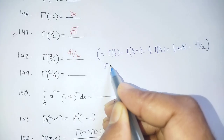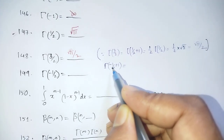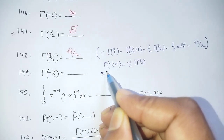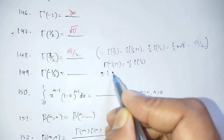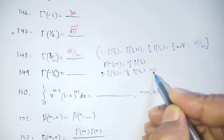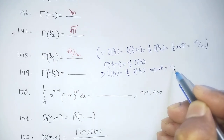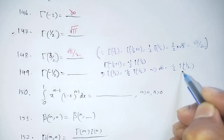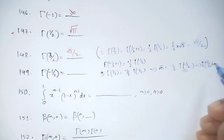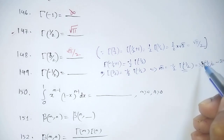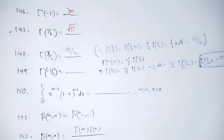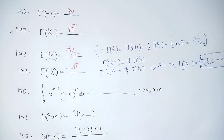Using the formula Γ(n+1) = n·Γ(n): Γ(-1/2 + 1) = (-1/2)·Γ(-1/2). This gives Γ(1/2) = (-1/2)·Γ(-1/2), and since Γ(1/2) = √π, we get Γ(-1/2) = -2√π.